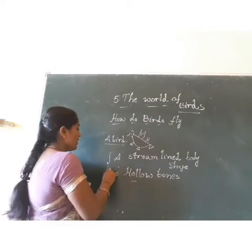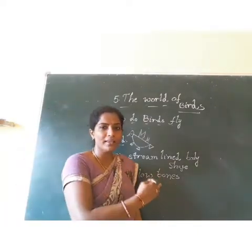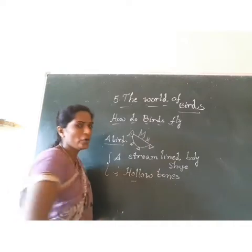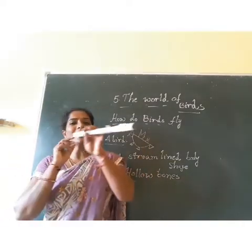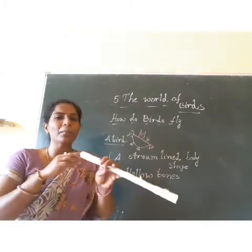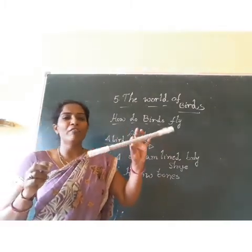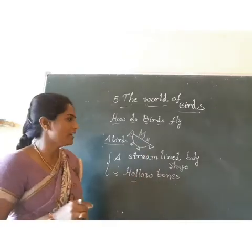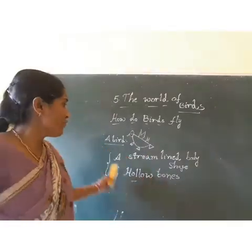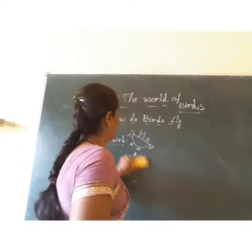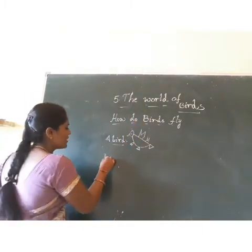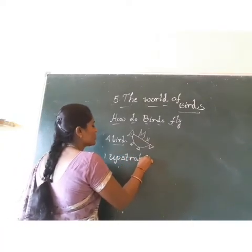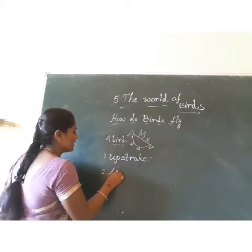These two things help while the bird is flying in the air — streamlined body shape and hollow bones. What is meant by hollow bones? Nothing is present in them, like bone marrow is not present. So automatically these bones are very weightless, and the bird can fly using them. And also while flying, they use upstroke and downstroke.